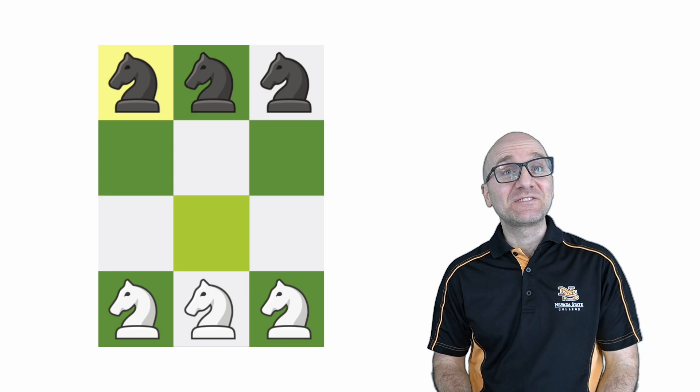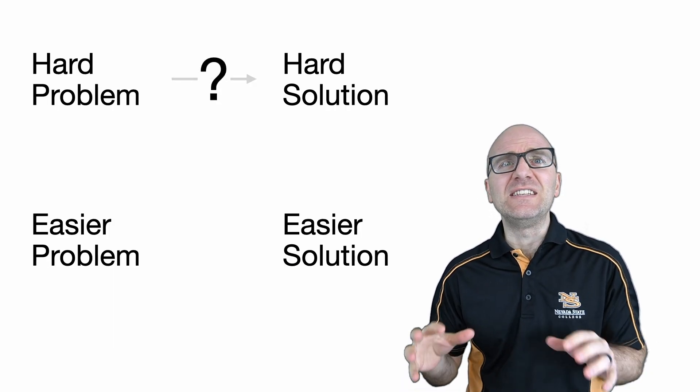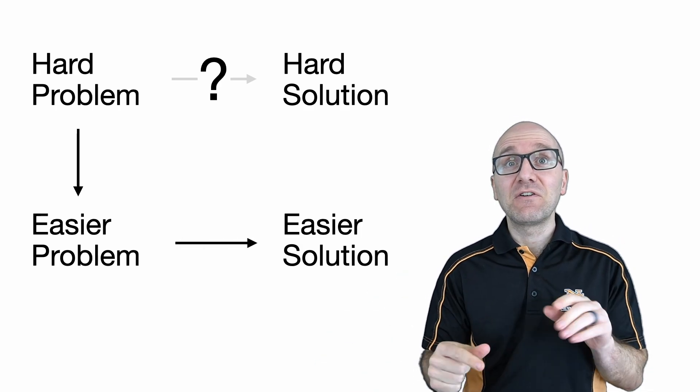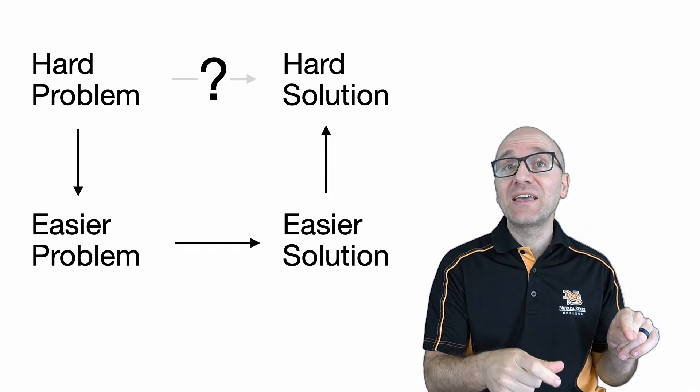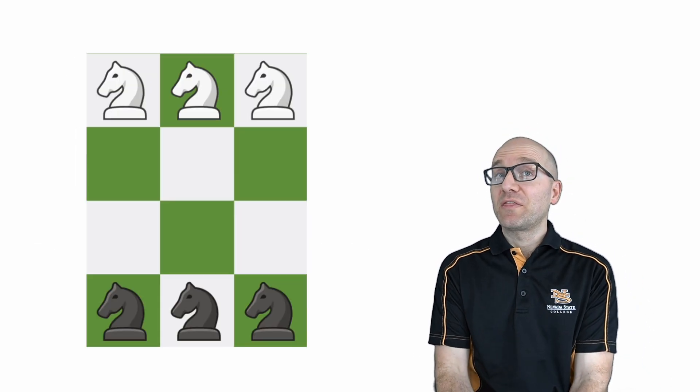We just used math to solve a chess problem. The most beautiful math is like that. You convert a difficult problem into a form that is easier to solve. You solve that easier problem, and then you convert your answer back to the original form.